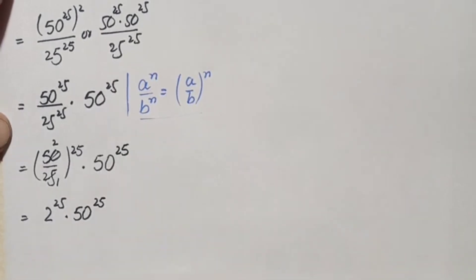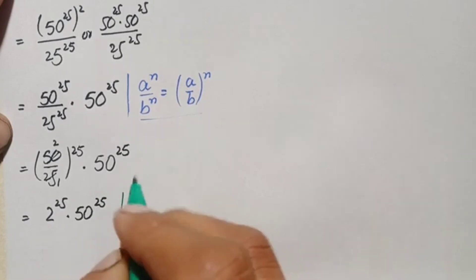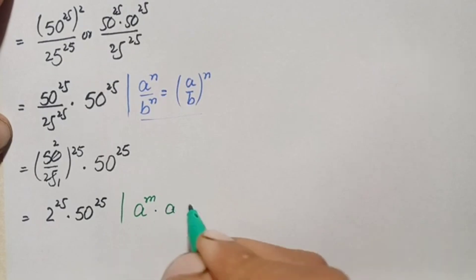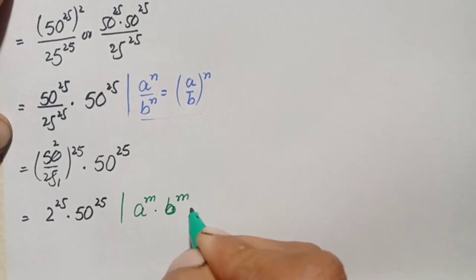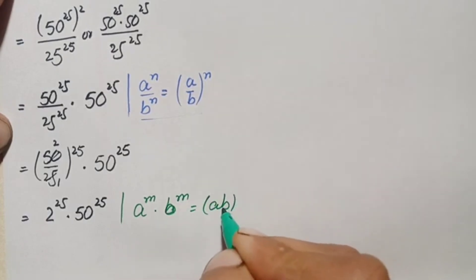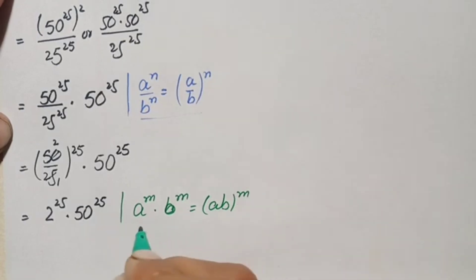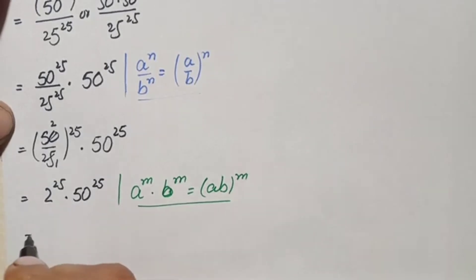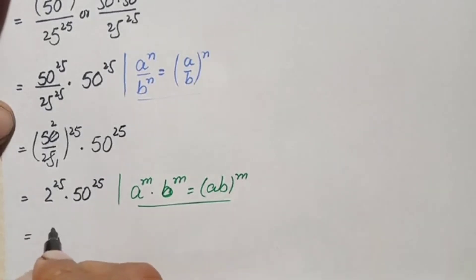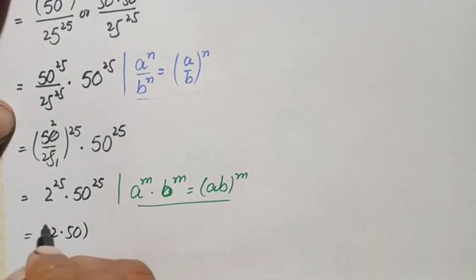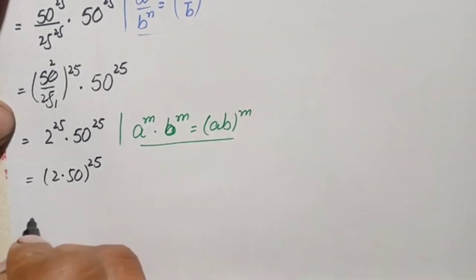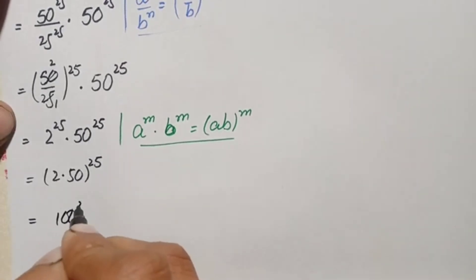Since both numbers have the same power, we will use the same-power exponential identity: a raised to power m times b raised to power m equals a times b, whole raised to power m. Using this identity, we multiply the bases: 2 times 50 is 100, so this becomes 100 raised to power 25.